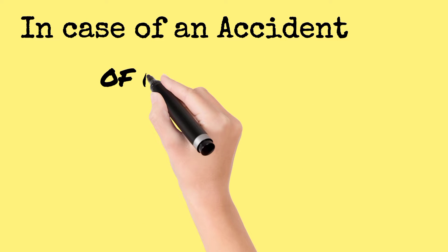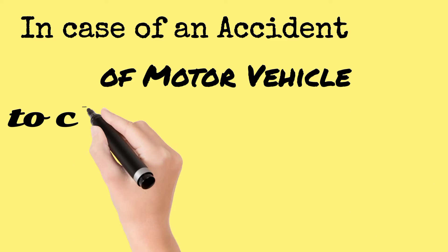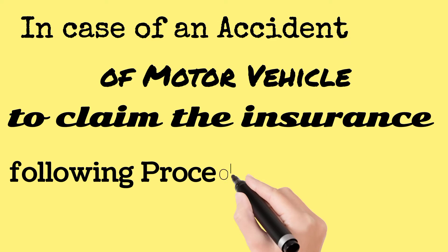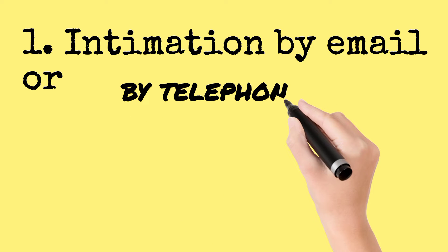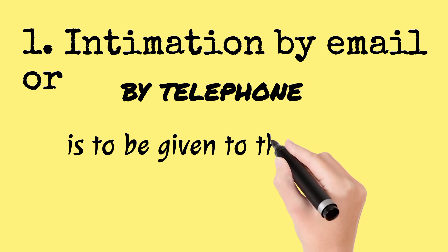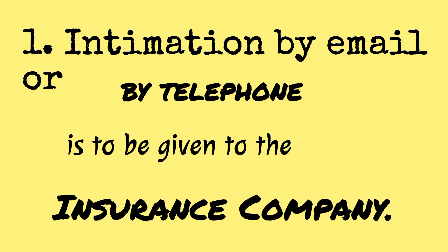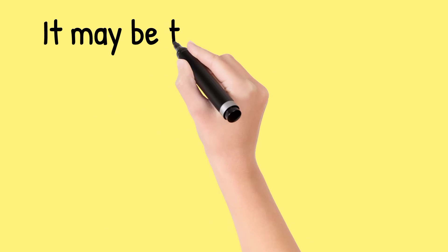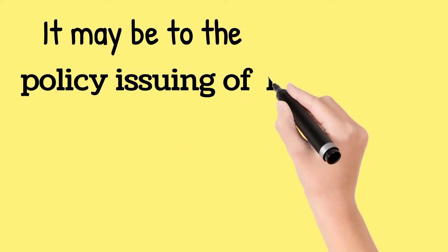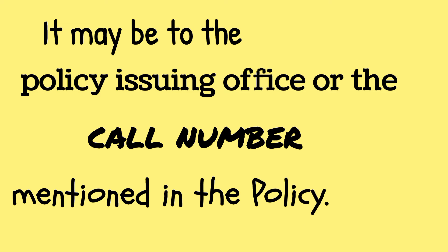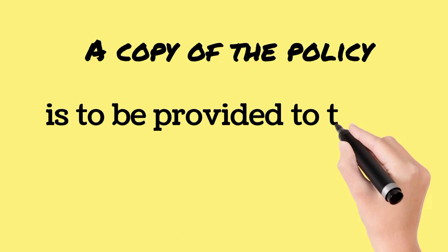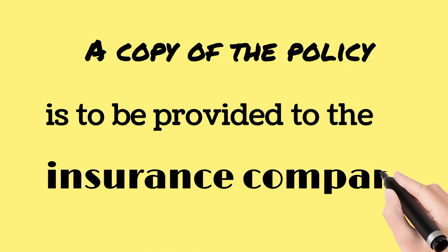In case of an accident of a motor vehicle, to claim the insurance, the following procedure is to be adopted. Intimation by email or by telephone is to be given to the insurance company — either to the policy issuing office or the call number mentioned in the policy. A copy of the policy is to be provided to the insurance company.